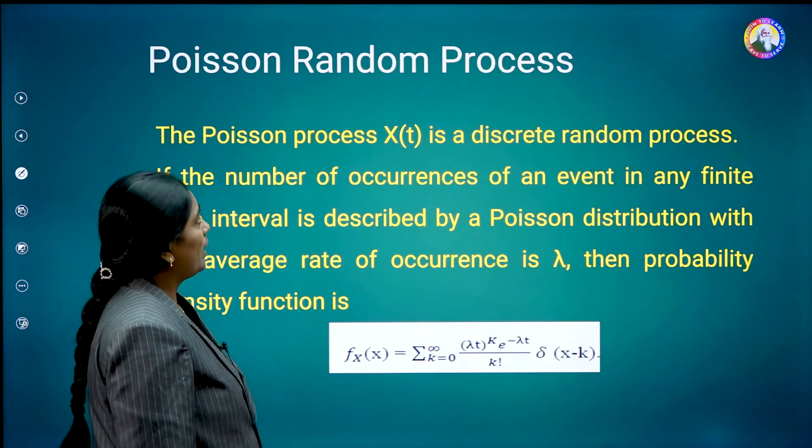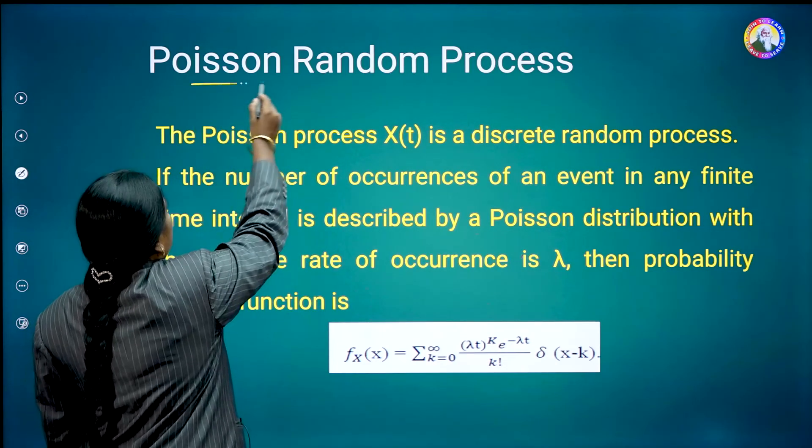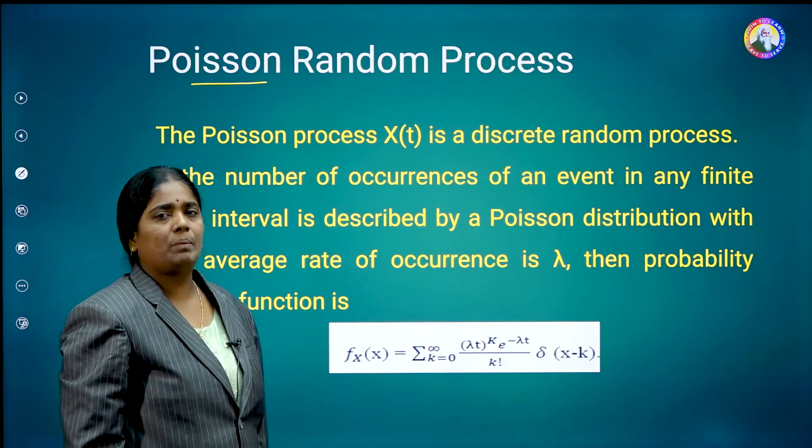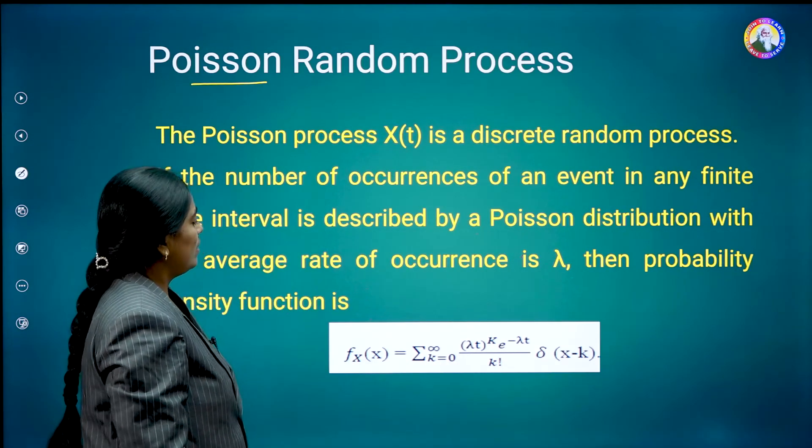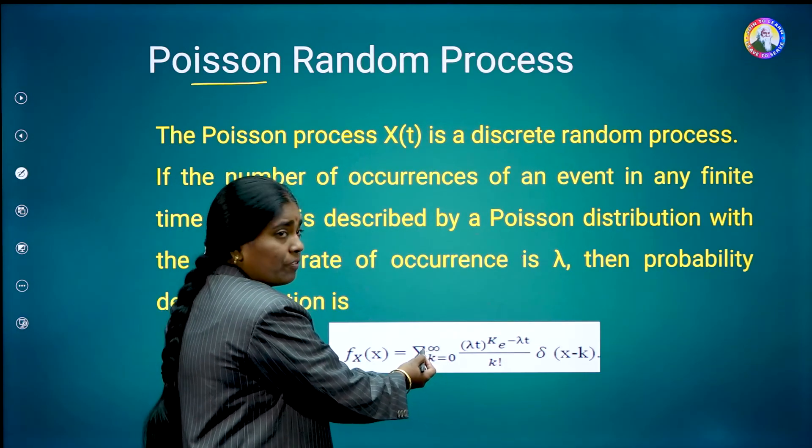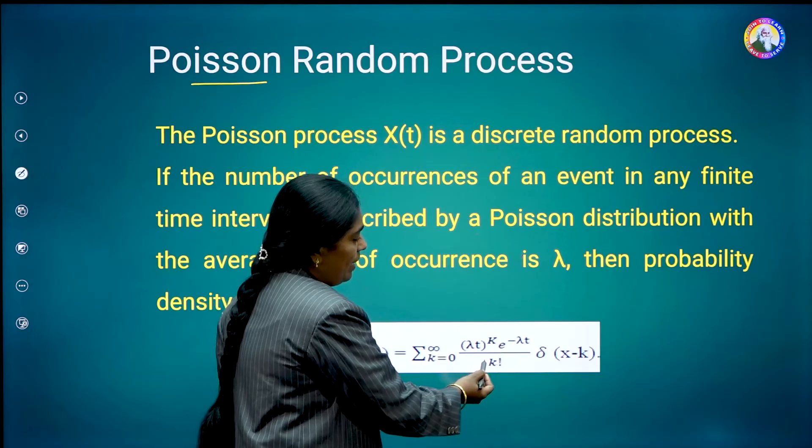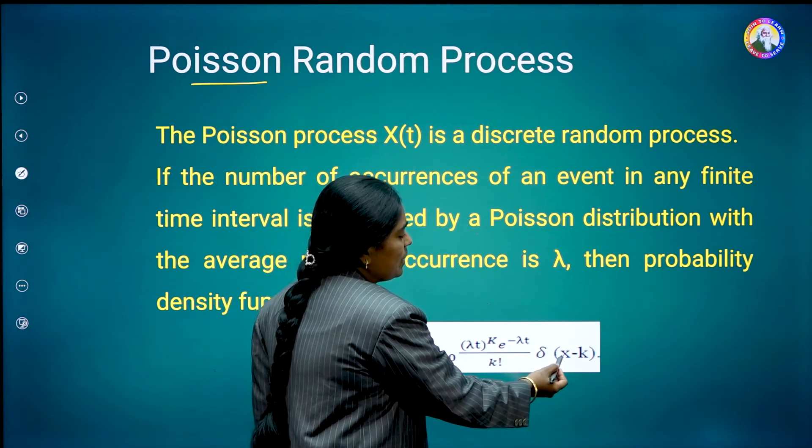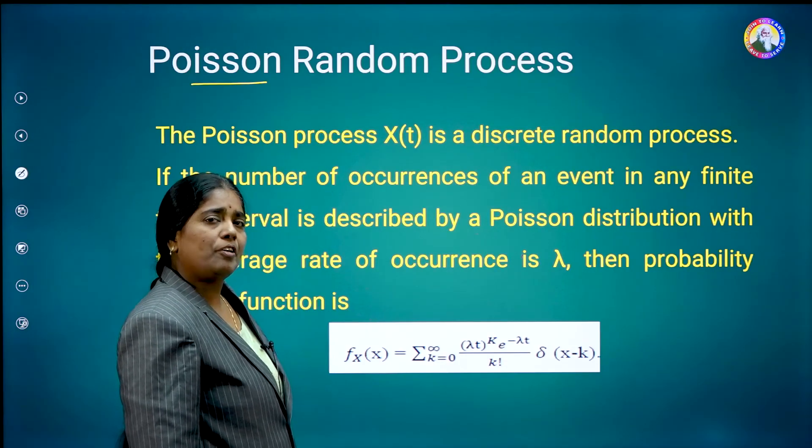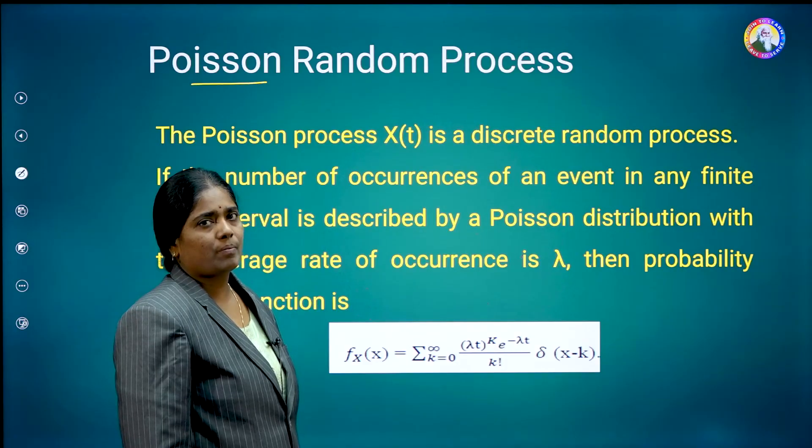Gaussian random process is an example for continuous random process. Here the Poisson random process is an example for discrete random process, and this process is used for the applications of counting purpose. That's why here you can see that its corresponding density function is given as small fx of x is equal to sigma k is equal to 0 to infinity, lambda into t whole power k into e power minus lambda t by k factorial into delta of x minus k. So, delta represents the impulse functions. That means here you can see that if you are going to plotting the Poisson random process, it consists of impulse functions, indicating that it is a discrete random process.